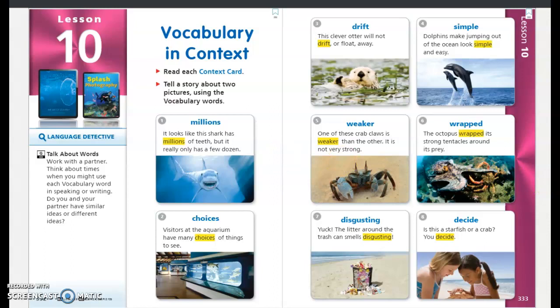Number six, wrapped. The octopus wrapped its strong tentacles around its prey. Number seven is disgusting. Yuck! The litter around the trash can smells disgusting.